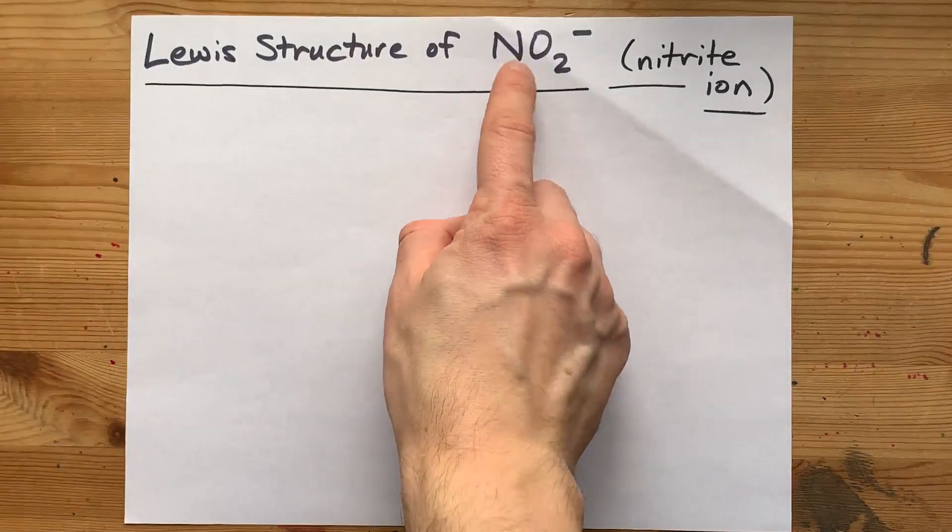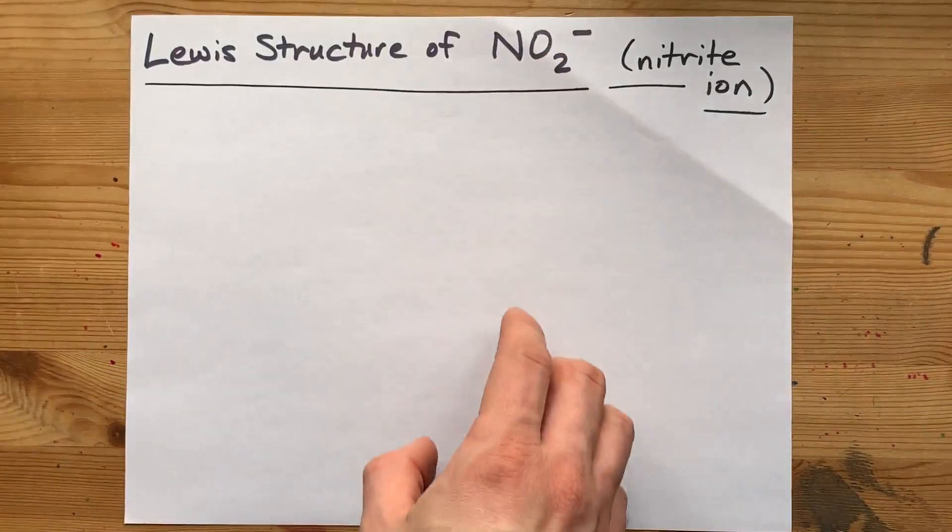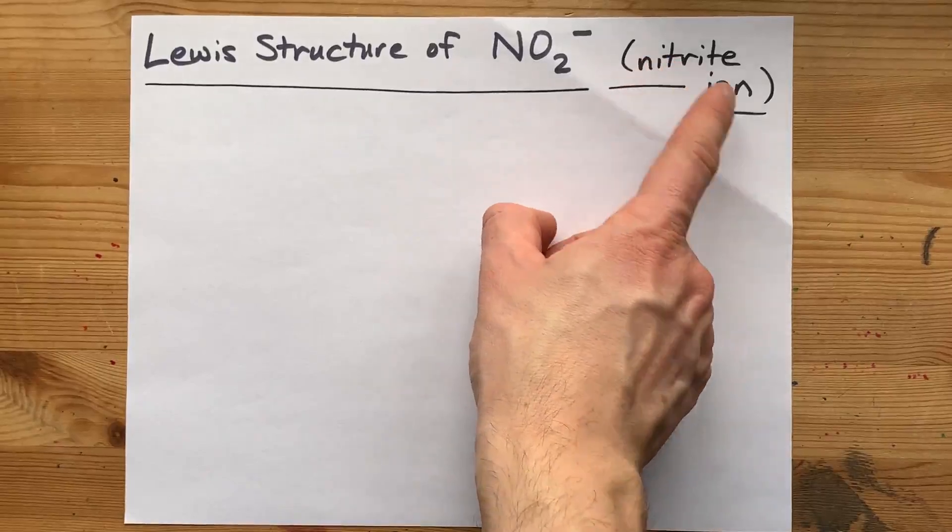We're going to draw the Lewis structure for NO2 with a minus one charge. This is the nitrite ion.